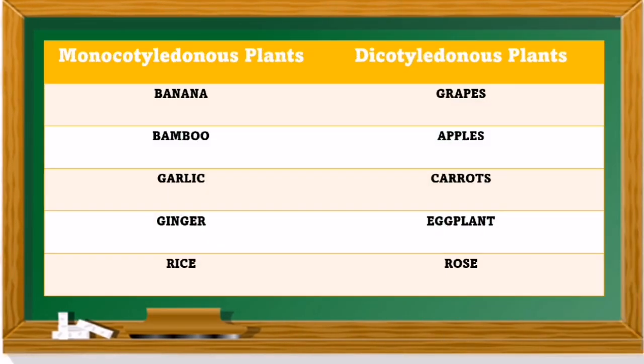Here are examples of monocotyledonous and dicotyledonous plants. In monocots we have banana, bamboo, garlic, ginger, and rice. In dicots we have grapes, apples, carrots, eggplants, and rose.